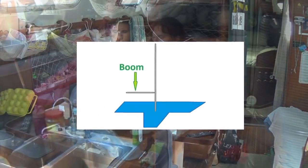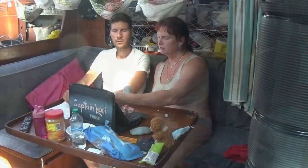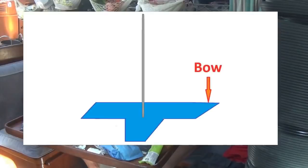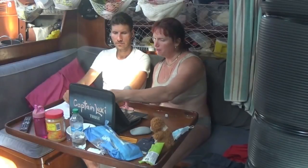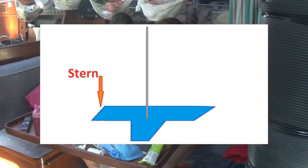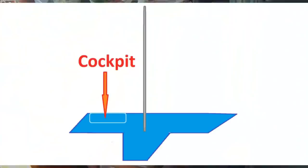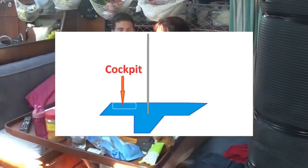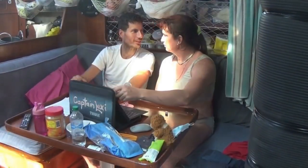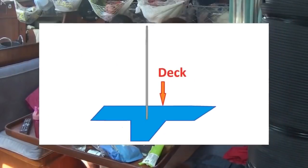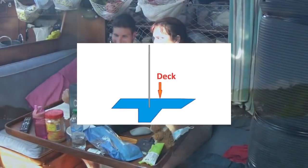It's a boom. The front of a sailboat — we never say front, we say? Bow. And what do we say about the back? We don't say back, we say stern. The area in the back with the seats where we sit is called the? Cockpit. And the top part that we can walk on is called the? Deck.